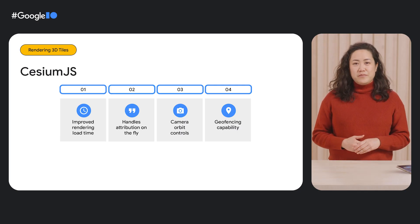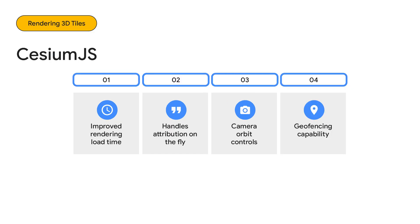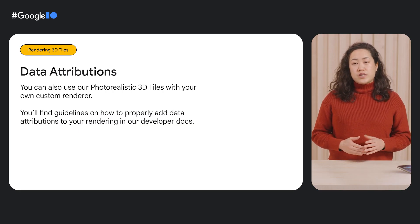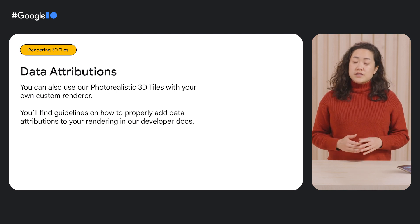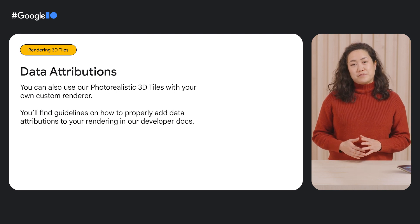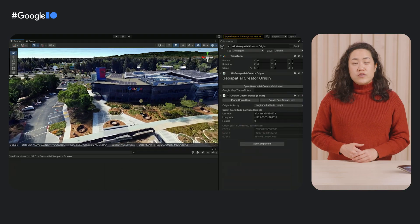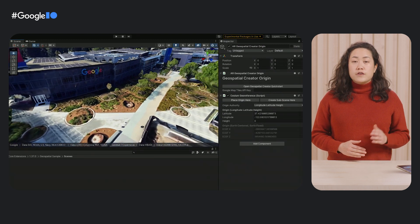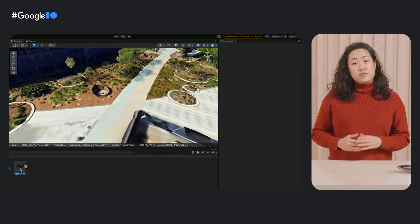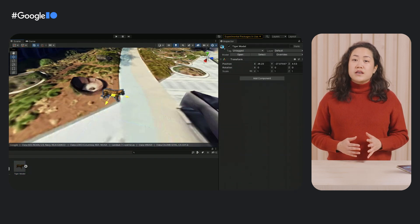Let's talk about our CesiumJS collaboration. Over the past several months, we've been working closely with them to improve the rendering performance of our 3D tiles in CesiumJS. Our API also returns data attribution information that CesiumJS handles gracefully for you on the fly, in addition to CesiumJS's camera orbit controls and tile geofencing capabilities. You can also use our photorealistic 3D tiles with your own custom renderer — you'll find guidelines on how to properly add data attributions in our developer docs. For our AR developers, we've included our photorealistic 3D tiles in two new products from ARCore: the Unity Geospatial Creator and Adobe Aero, where in both content editors you can load the 3D tileset in the location of your choice to help anchor AR objects to the real world. For more information, check out our session called Introducing Geospatial Creator Tools and New AR Features.